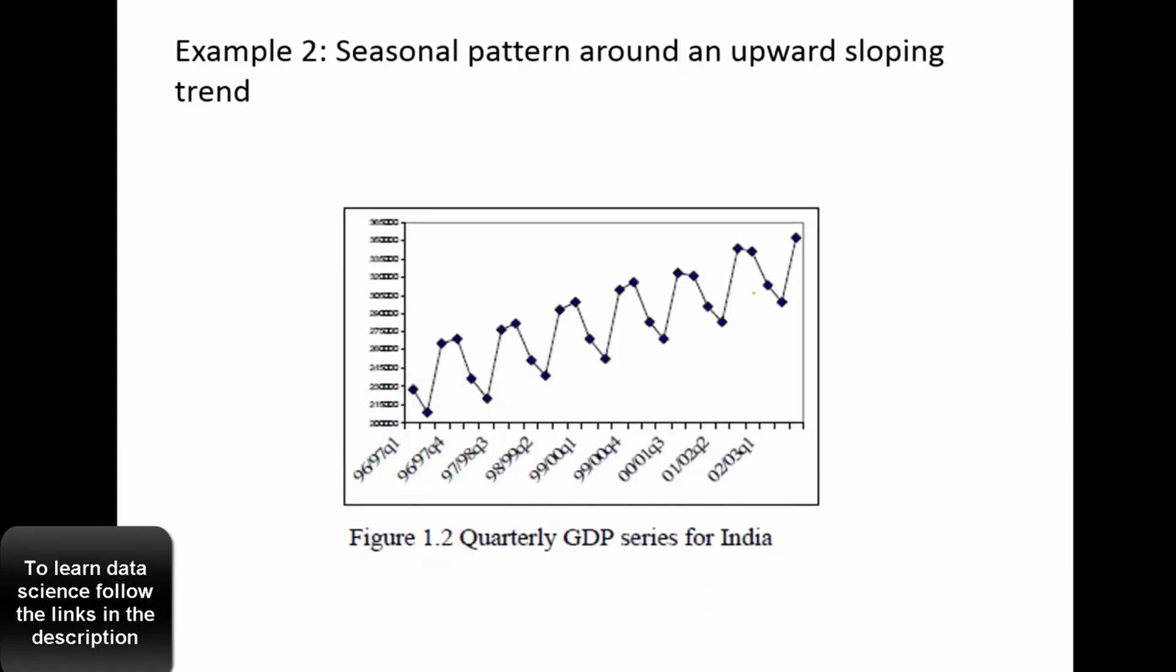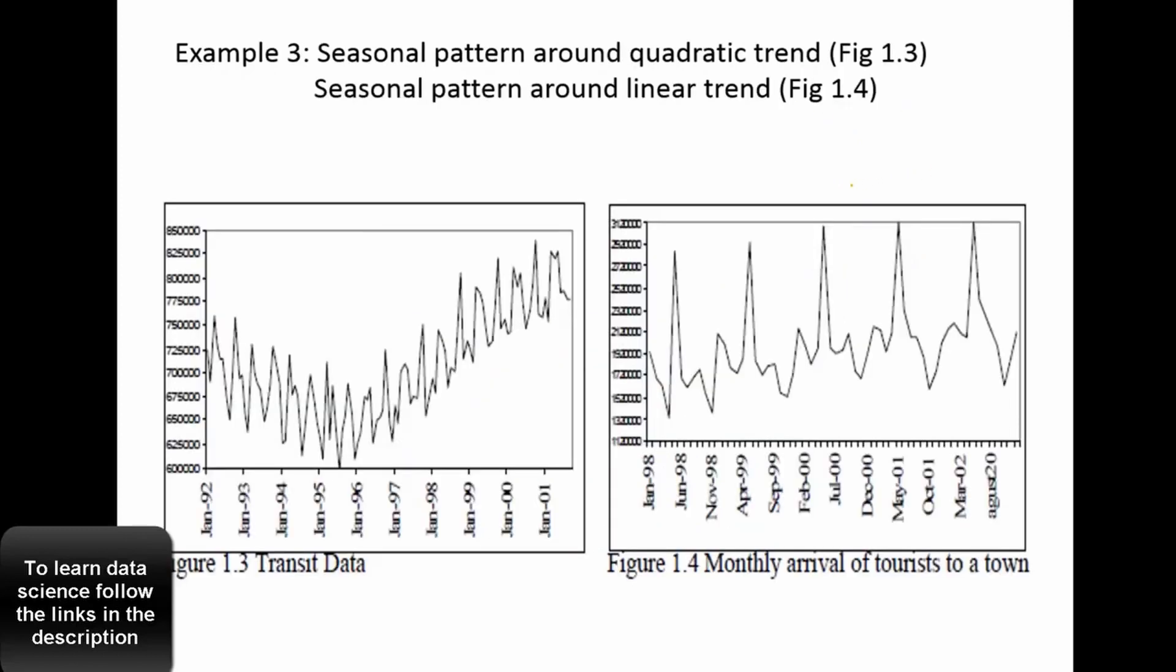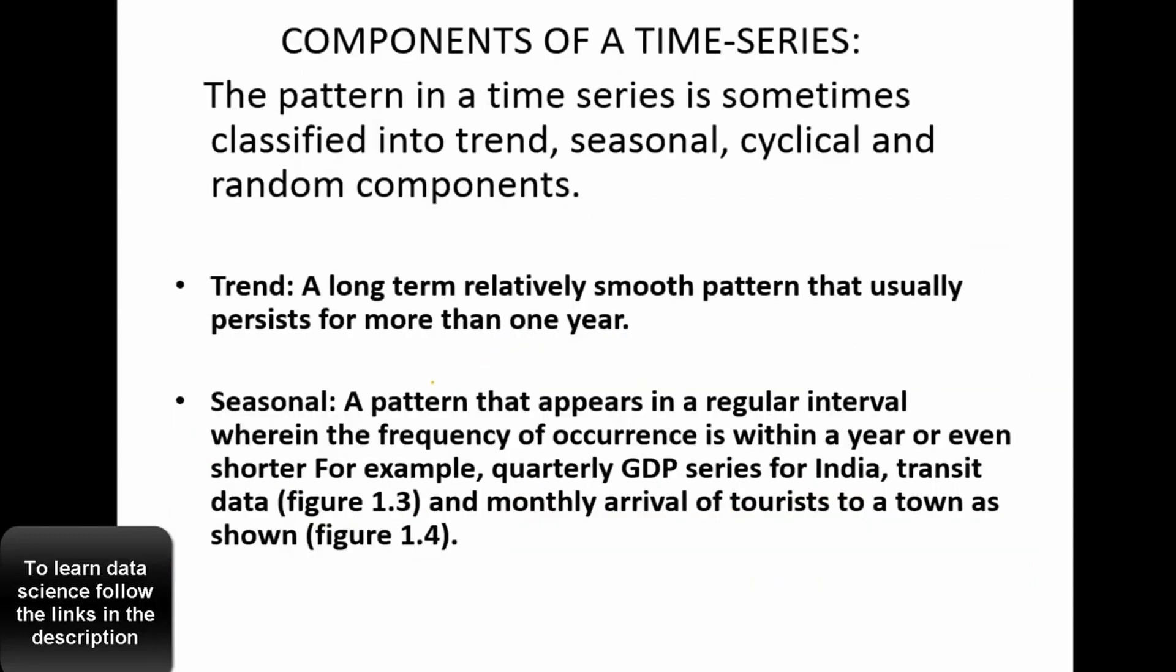And there could be an upward sloping data, so this is the typical example of an upward sloping data. Could be a mix of both upward sloping and downward sloping, that could also be there. So this is a typical case where initially there was a downward slope, and then there is an upward slope. So these are different scenarios or different types of time series that you probably will come across in real-time scenarios.